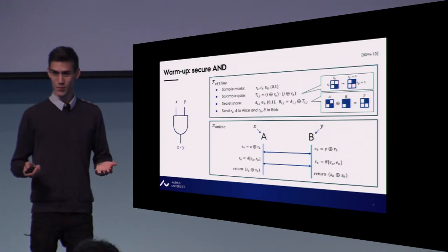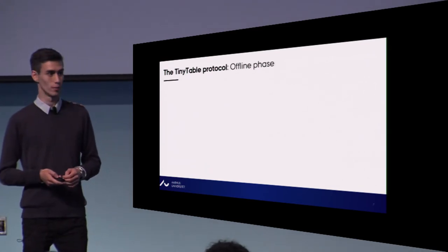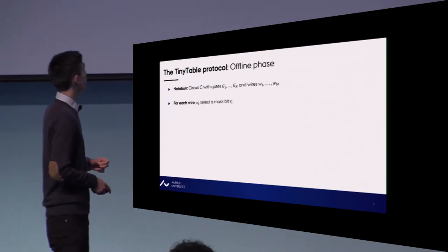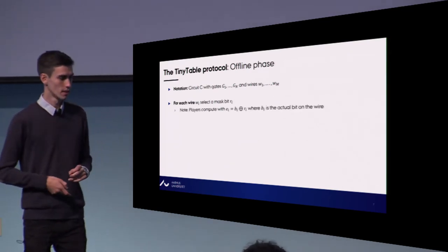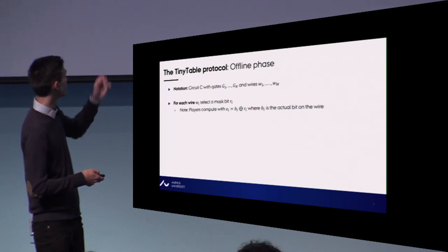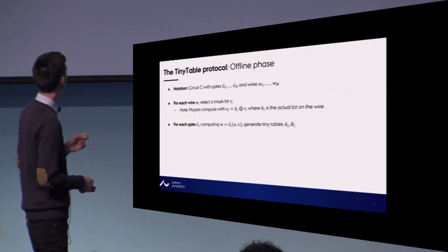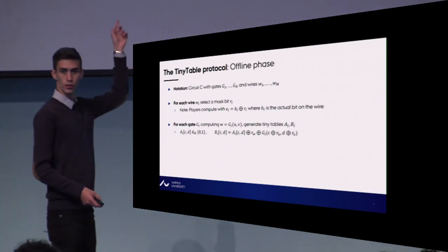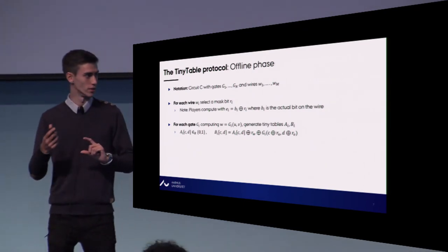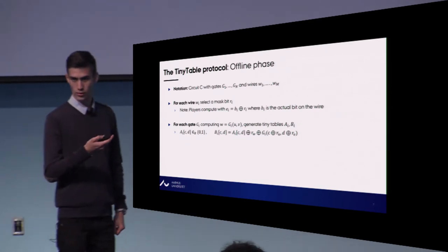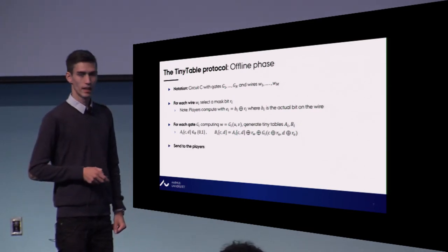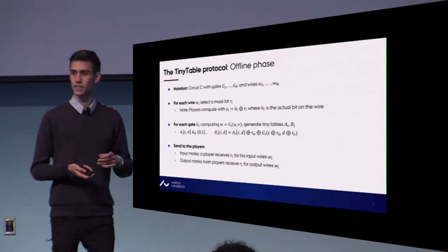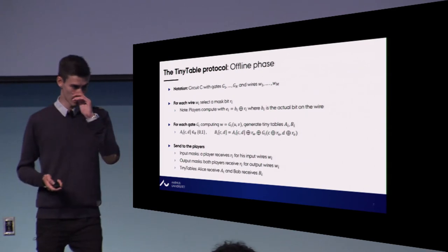Now we're ready for the Tiny Table protocol. The offline phase is similar. Given a circuit C with N gates and M wires, for each wire we select a random mask, and we compute with E_A, which is the encryption of the real bit B_i. For each gate we do this table trick — secret sharing a table — where R_W encrypts the output of the gate under the mask assigned to the output wire. We send corresponding input masks to the players and output masks, and the tables.